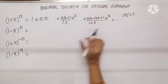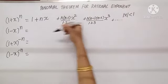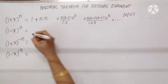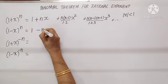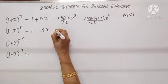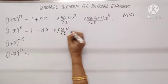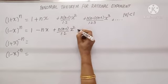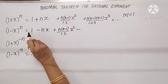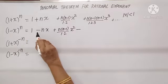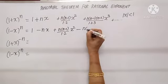What about the minus symbol? The same idea but alternately positive and negative. So the expansion is 1, and the same coefficients, but plus, minus, plus, minus and so on.